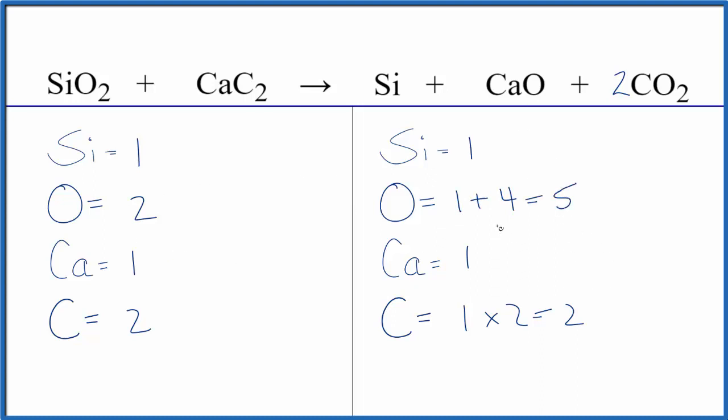Everything's balanced except the oxygens. I really can't do much over here. If I put two that would only give me four. If I put a three that would give me six. So I think what I'd like to do is change the calcium oxide so that I can get an even number over here.